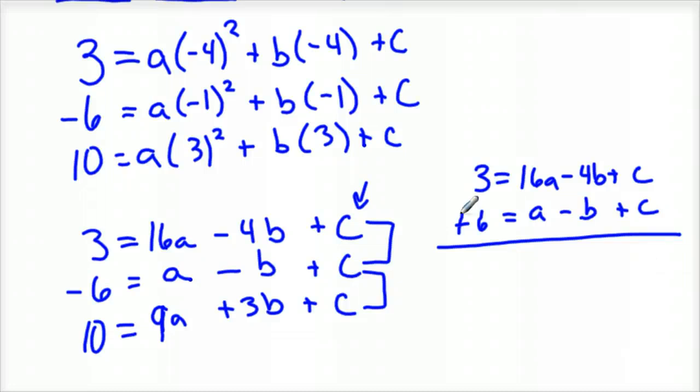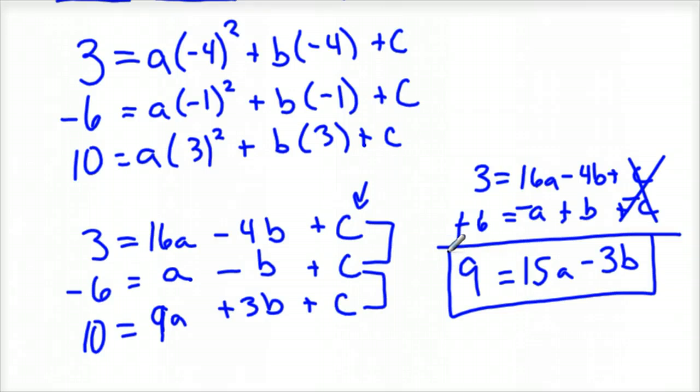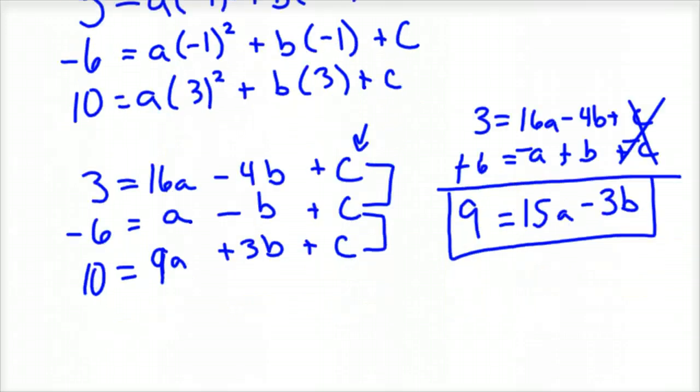So you just change your signs on one of the equations. I'll do it to the bottom one. So you'd have plus, minus, plus, minus. And so you'd have 9 equals 15a minus 3b. And the c's eliminate. And so we'll kind of keep that in the back burner for now. So we're going to use that a little bit later.